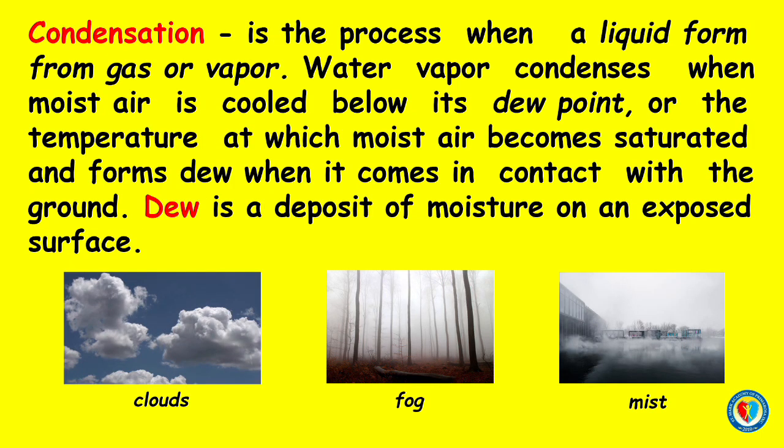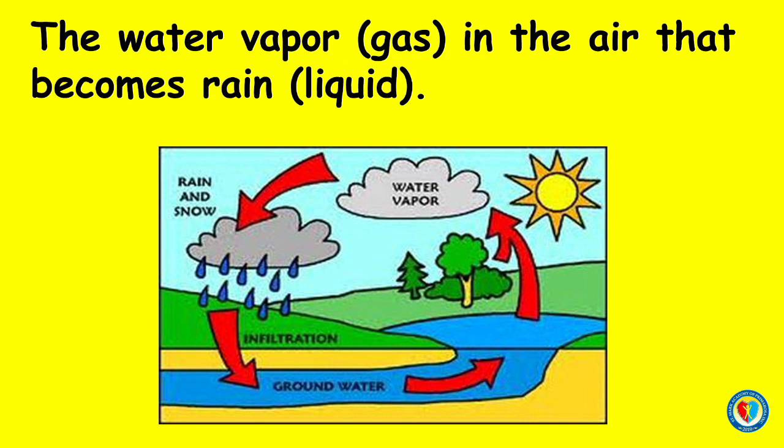Condensation is the process when a liquid forms from gas or vapor. Water vapor condenses when moist air is cooled below its dew point — the temperature at which moist air becomes saturated and forms dew when it comes in contact with the ground. Dew is the deposit of moisture on an exposed surface. Clouds, fog, and mist are produced by condensation. When heat is removed from a gaseous substance, the molecules combine to become liquid. An example is water vapor in the air that becomes rain.